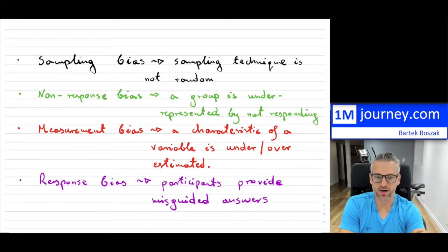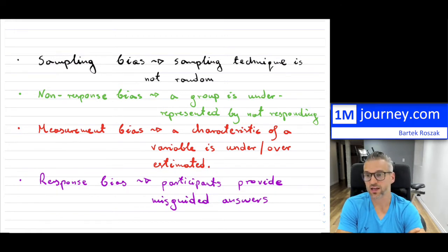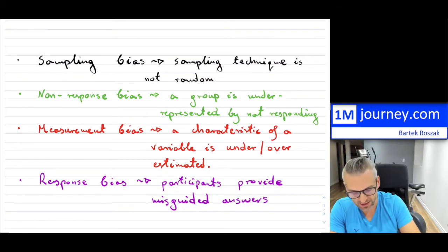The last one is the response bias. So participants provide misguided answers. This is done on purpose. They will create a bias in your survey collection because they're not being honest. This one and the non-response bias are easy to understand. But they're very difficult to be able to see if these are true or not.